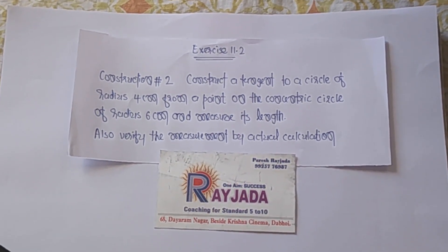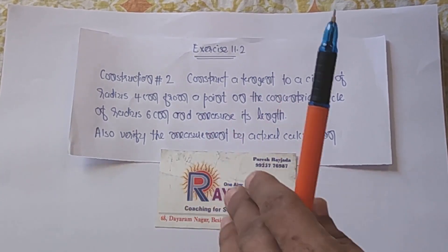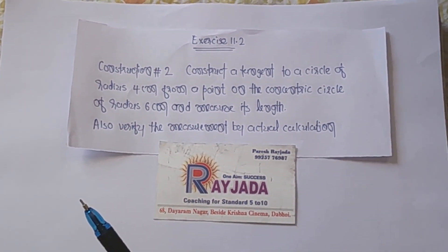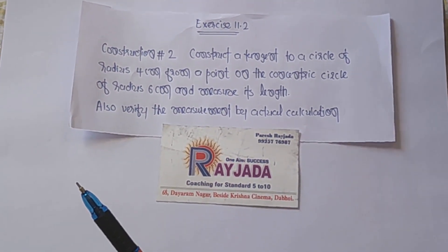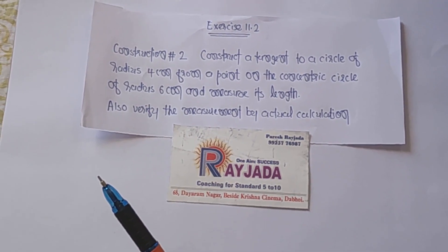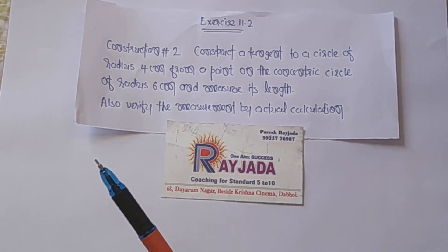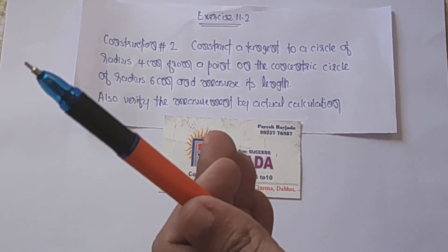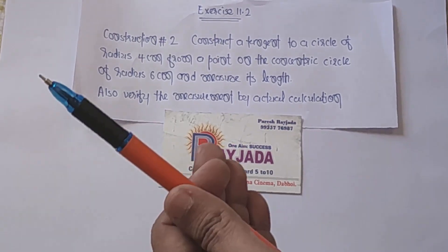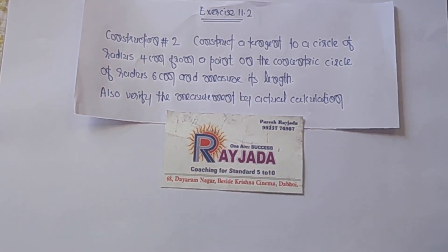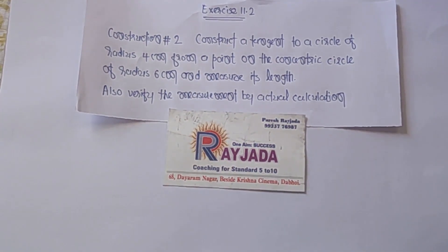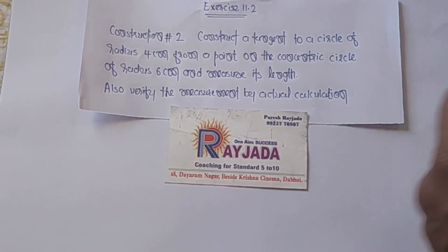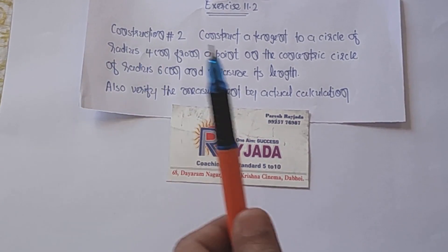Practically measure karenge, aur phir usko calculation se check karenge. Chalo dosto, ek dum easy construction hai. Pehli construction mein jo circle diya hai, uska center diya hai, uske bahar ka ek point diya hai, us point mein se circle ko tangent draw karna hai.